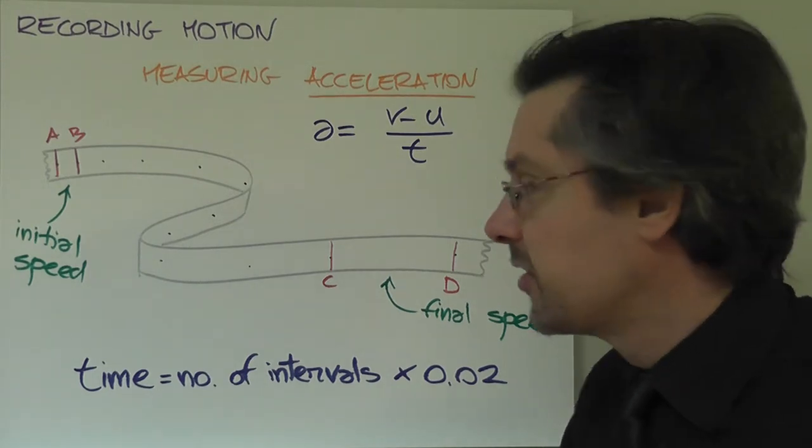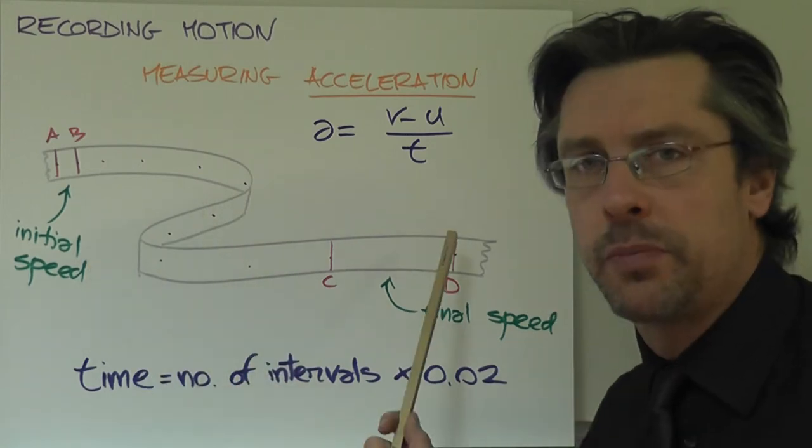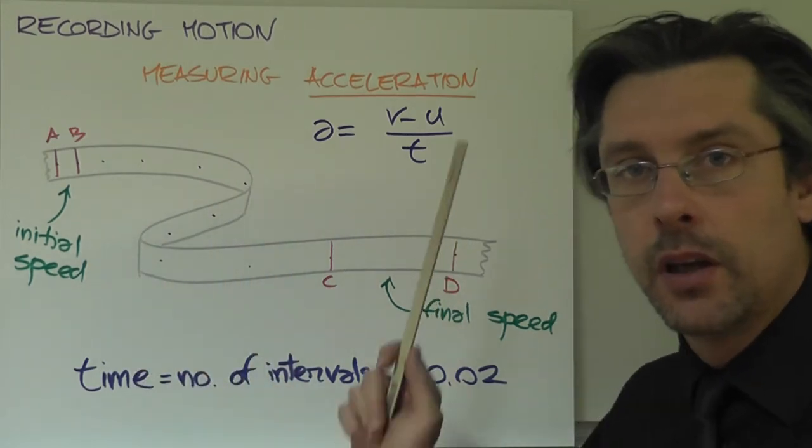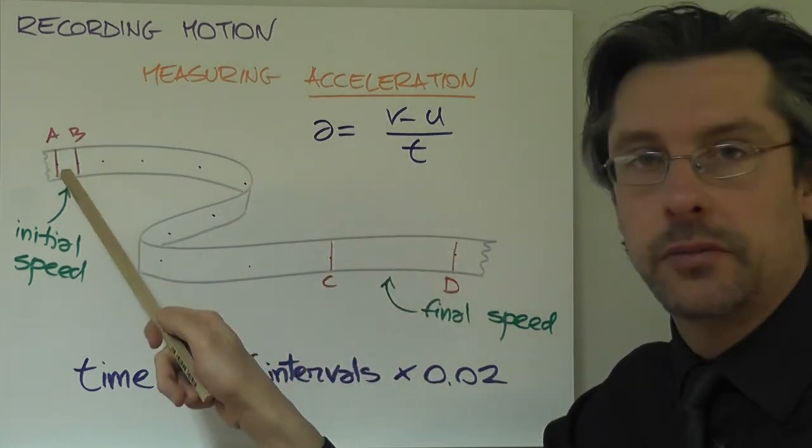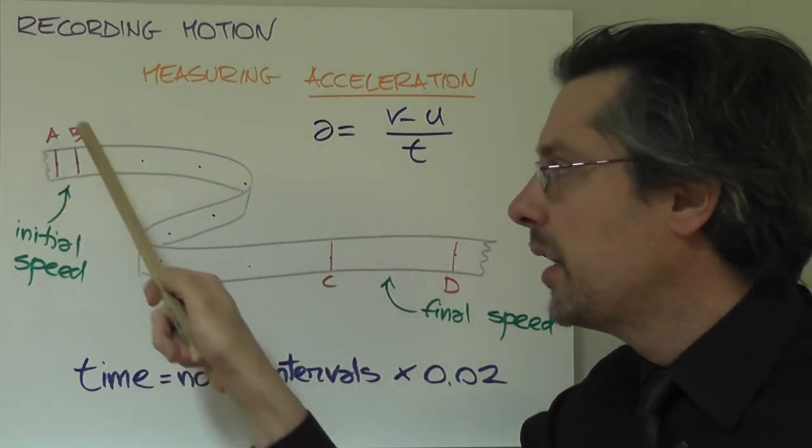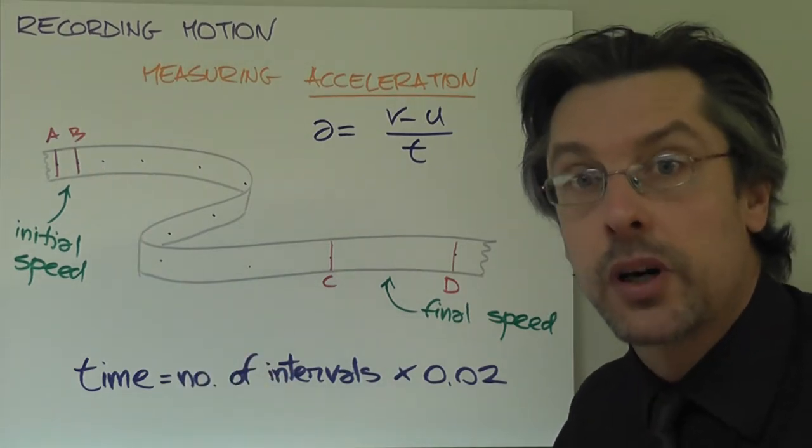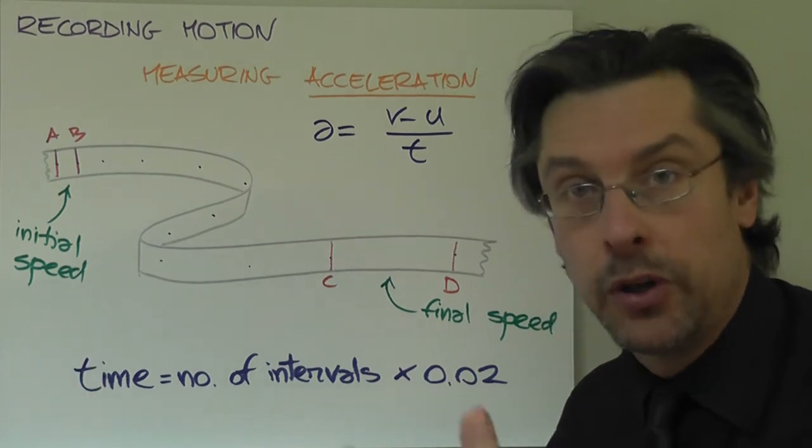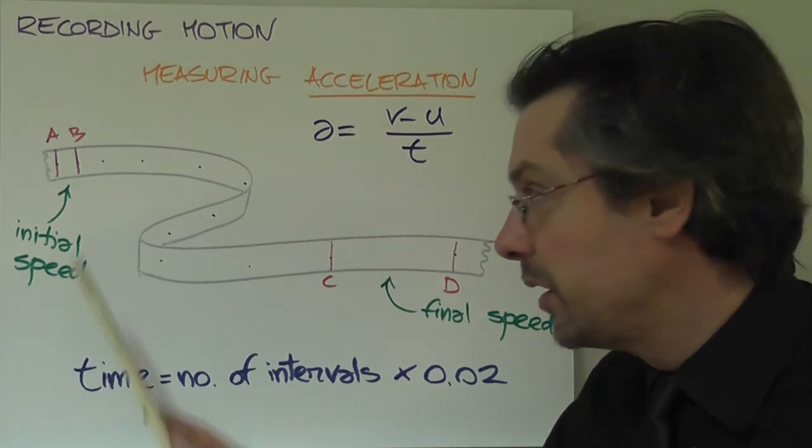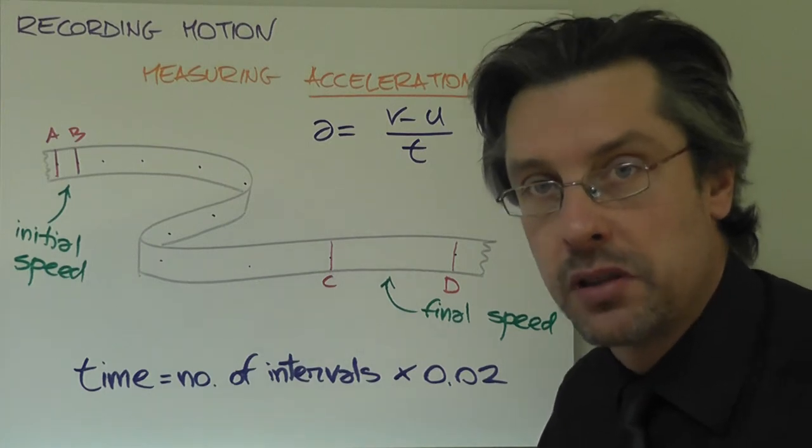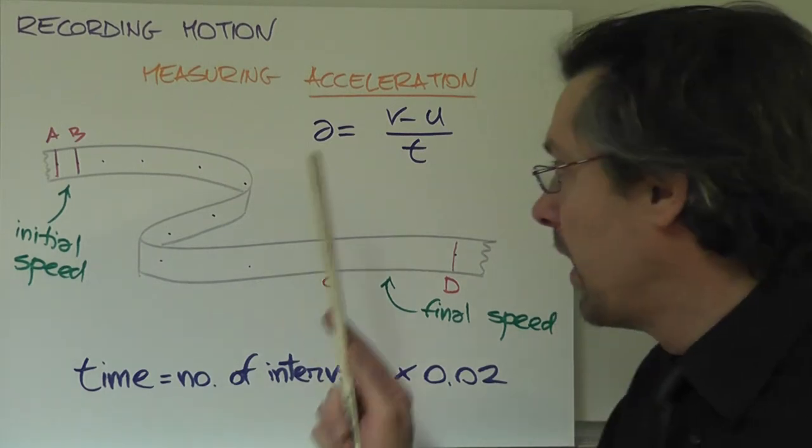How do we do this in practice? Let's imagine we have a very long piece of tape that recorded the motion of a trolley. We look at the first interval between points A and B. Now the speed between these two dots will be our initial speed. And now we know how to find that initial speed. We measure the distance and divide by 0.02. And there we have U.